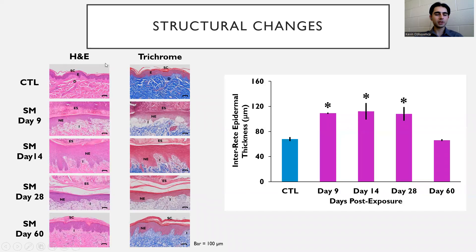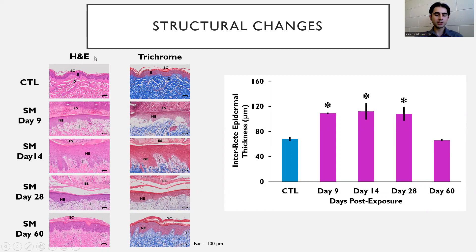On the left are our histological stains: an H&E stain and a trichrome stain. Trichrome being a counter-stain to H&E, utilizing a dye called aniline blue, which stains type 1 and type 3 collagen in the dermis a royal blue color. On the left you see a control skin with H&E stain showing a normal stratum corneum, a normal epidermis, and a normal dermis.